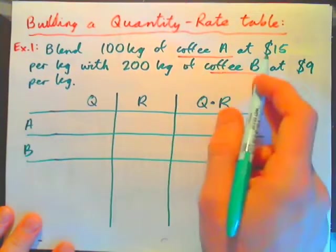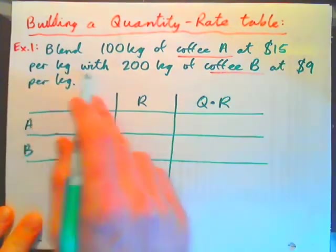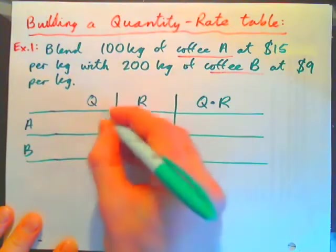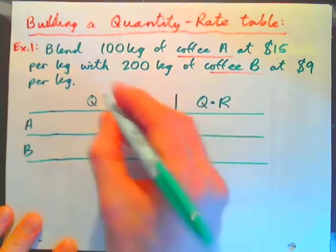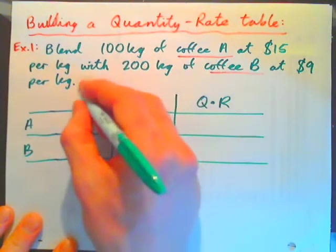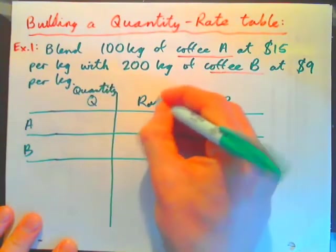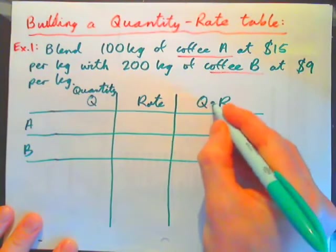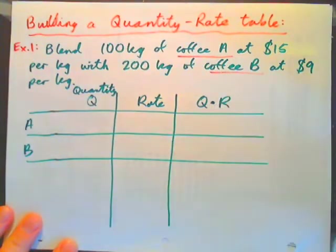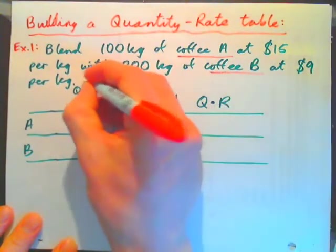Now, coffee A costs $15 per kilogram and we're going to take 100 kilograms, so that's quantity. Q stands for quantity. R stands for rate, and this is quantity times rate. So our quantity is in kilograms.